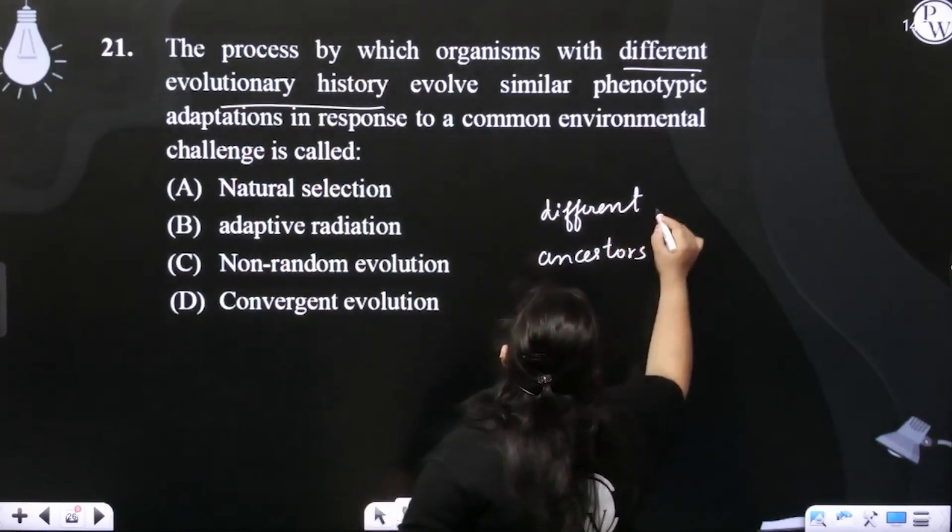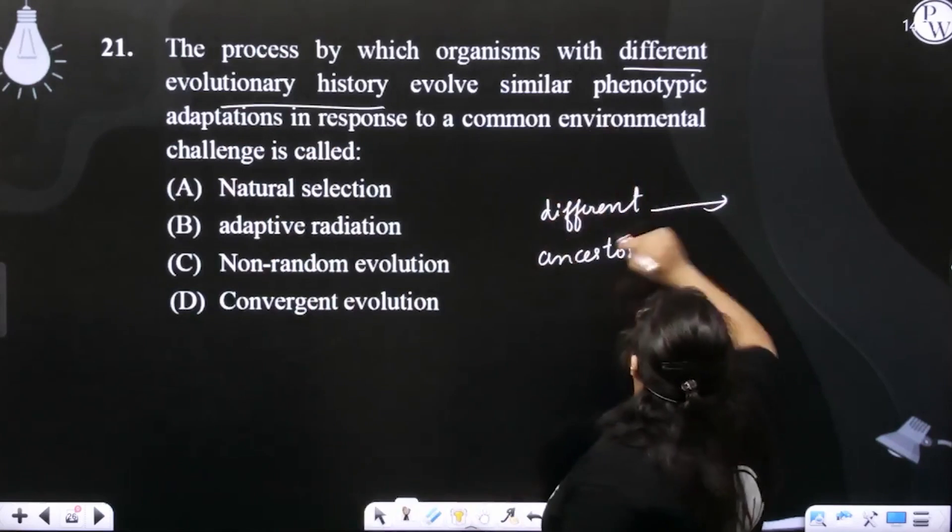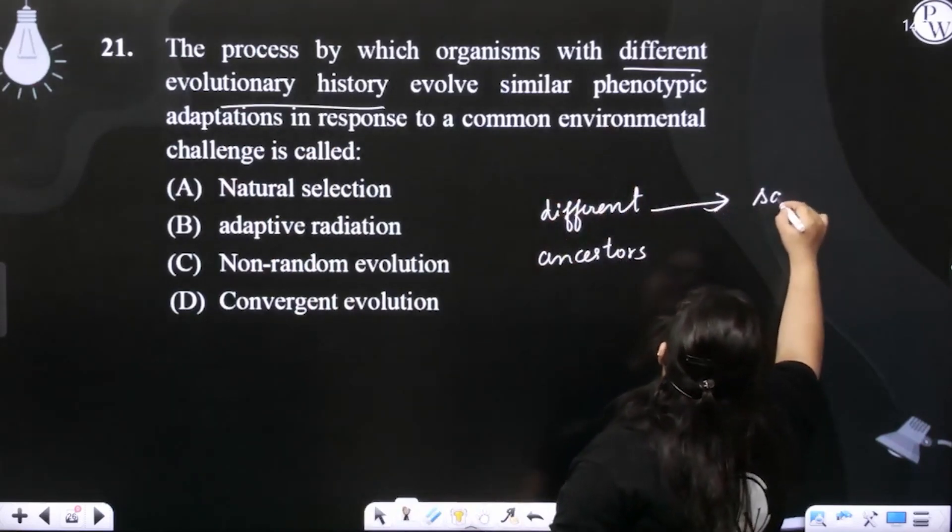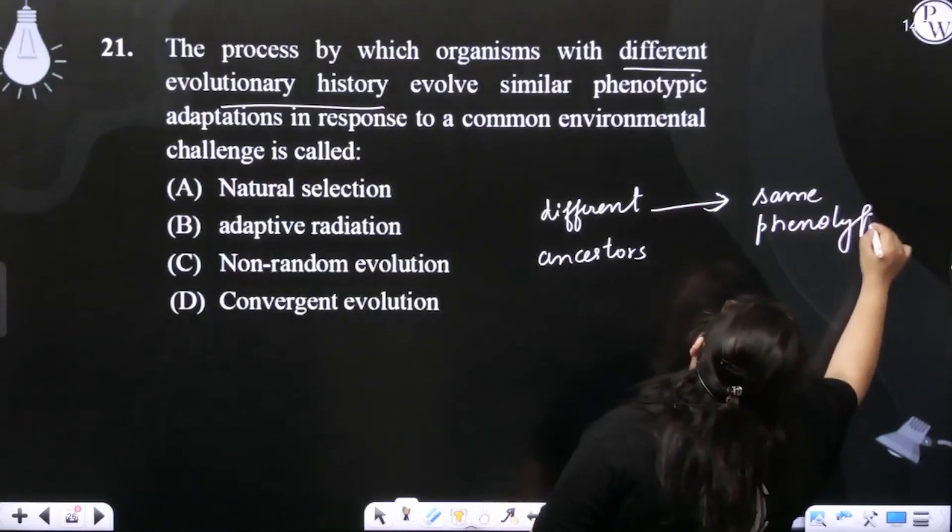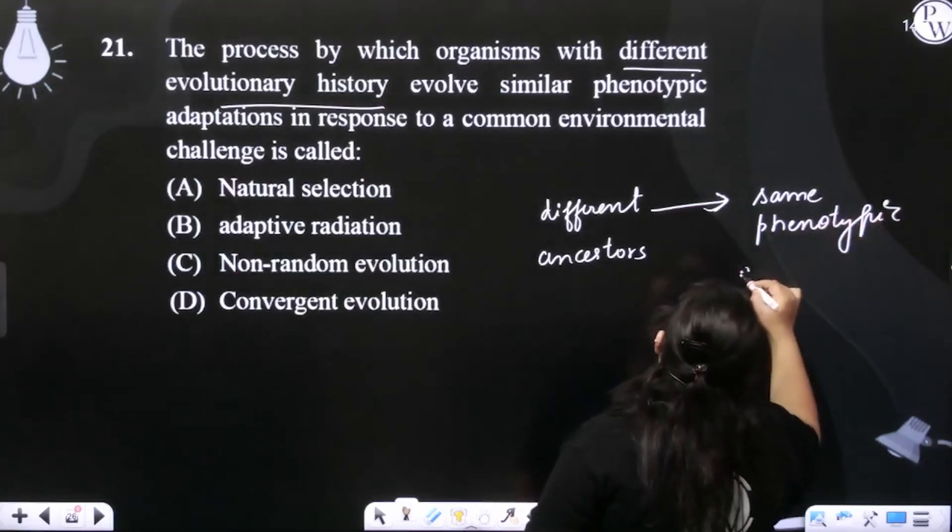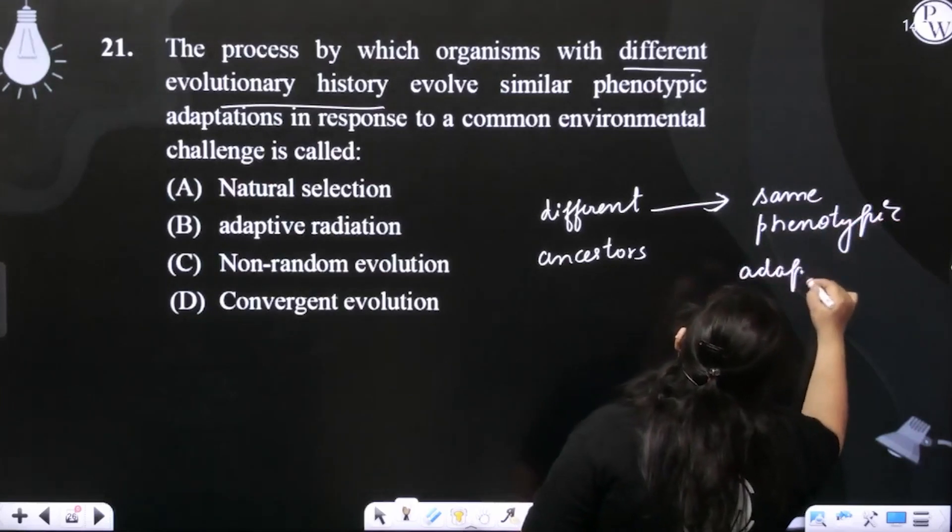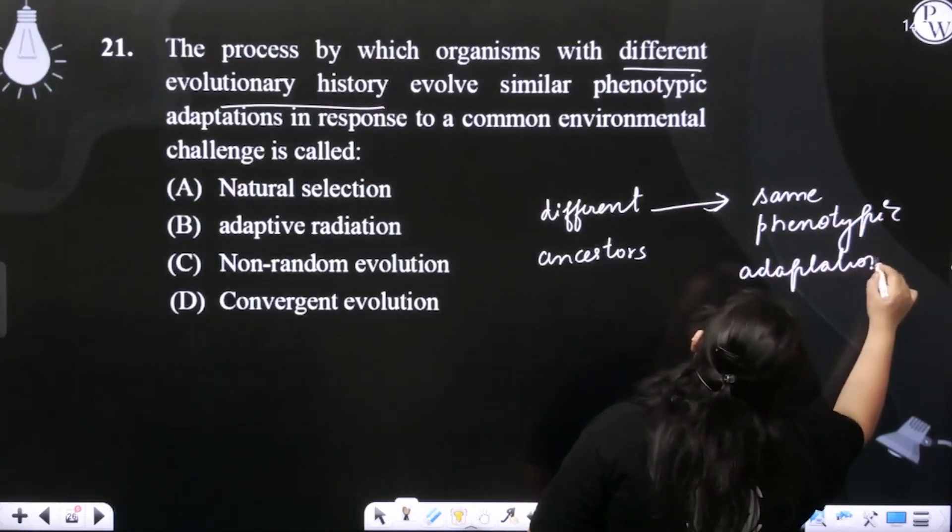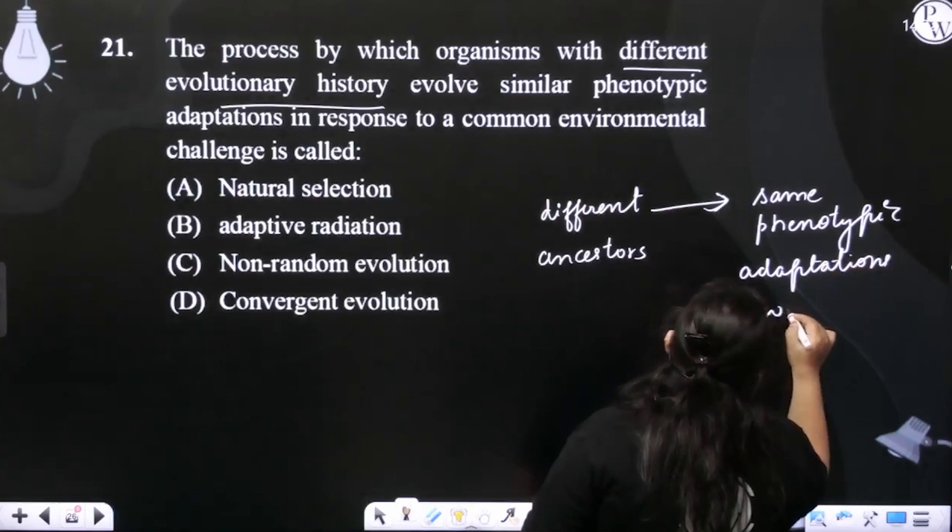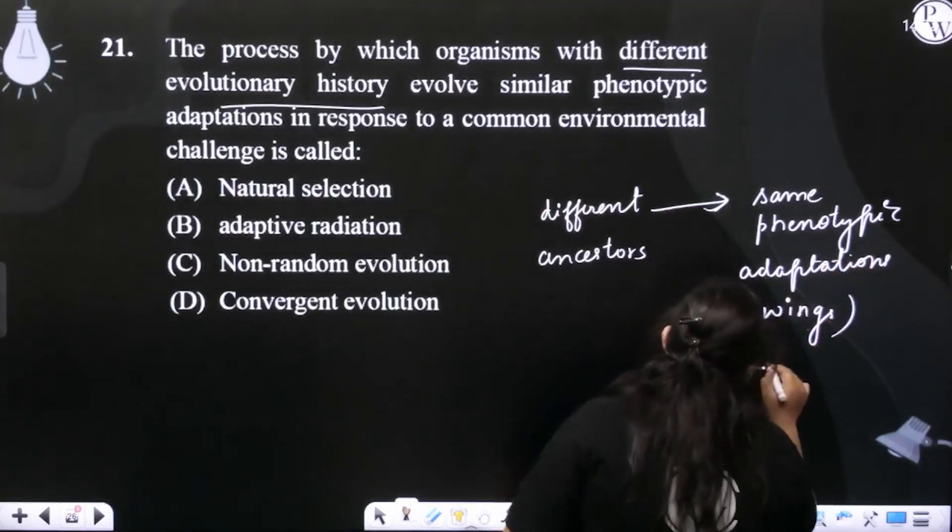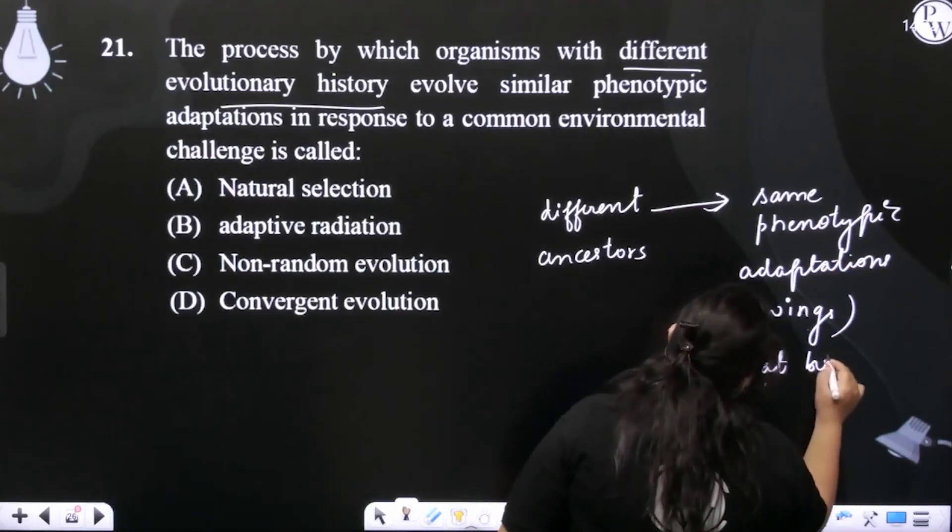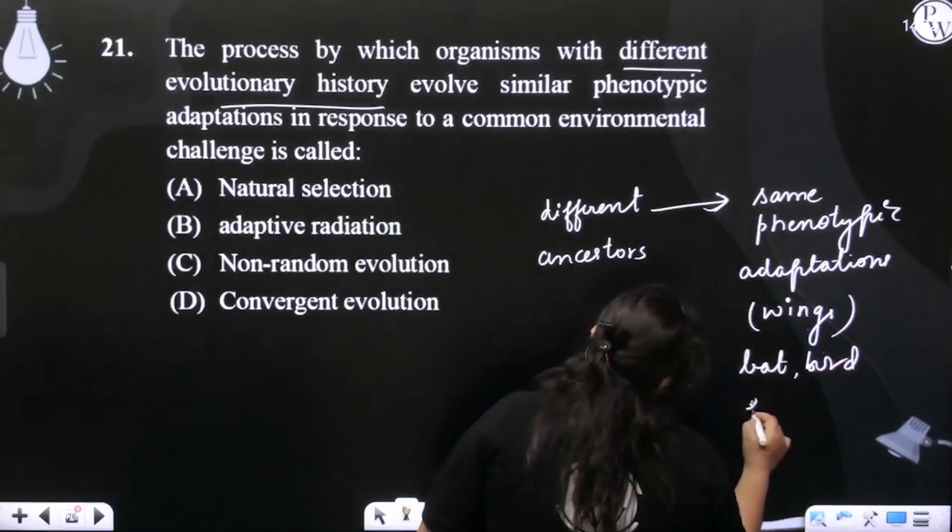They are evolving similar phenotypic adaptations, meaning the same adaptations. For example, wings - wings in the case of bat, bird, and in case of insects.